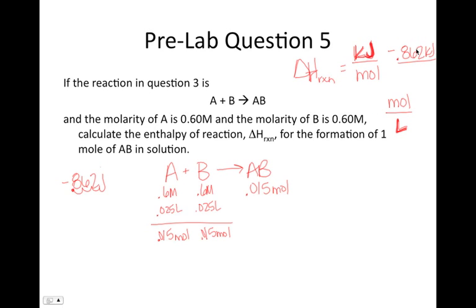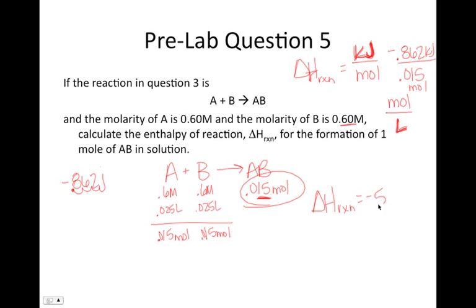Dividing negative 0.862 kJ by 0.015 moles gives negative 57.4666... kJ/mol. We are limited to two sig figs, so the delta H of reaction equals negative 57 kilojoules per mole. In this case, we would expect this reaction to be exothermic because it has a negative delta H. That's all for the pre-lab questions.